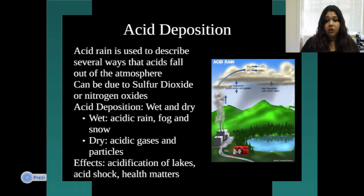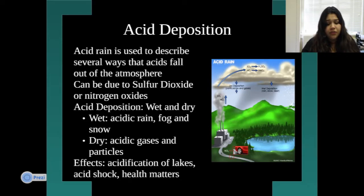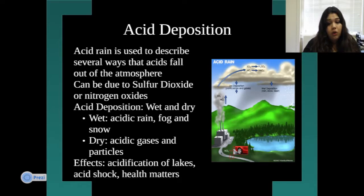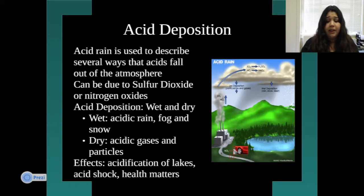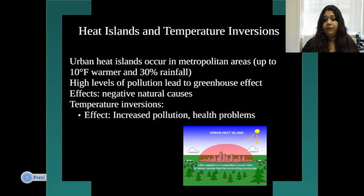There is also acid deposition. Acid rain describes several ways that acids fall out of the atmosphere — it can be due to sulfur dioxide or nitrogen oxides. Acid deposition has wet forms (acidic rain, fog, and snow) and dry forms (acidic gases and particles). Effects include acidification of lakes, acid shock, and health impacts on animals and humans.